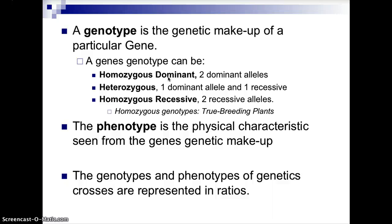The purple flower true breeding parent plant had a homozygous dominant, capital P capital P, genetic makeup. And the white flowered plant in that parental generation cross had a homozygous recessive genotype — two recessive alleles, lowercase p lowercase p. The phenotype is the physical characteristic seen from the genetic makeup. So purple would be one phenotype for that gene and white would be the other. The genotypes and phenotypes of genetic crosses are represented in ratios, and we'll talk about that in our next lecture.